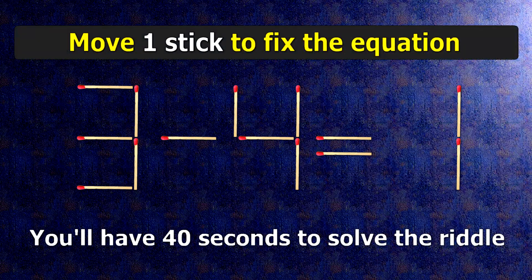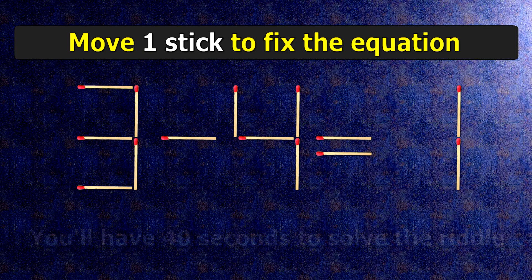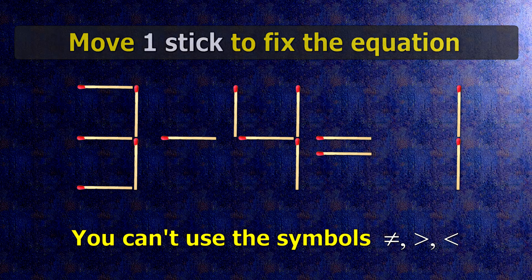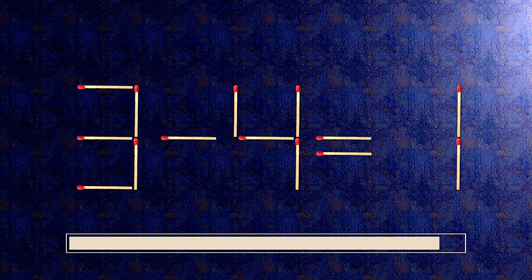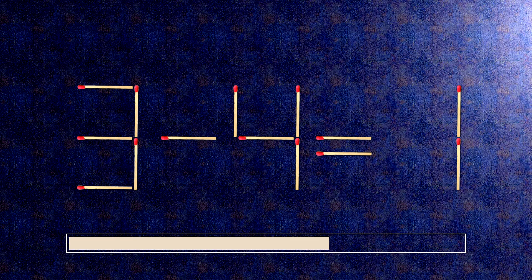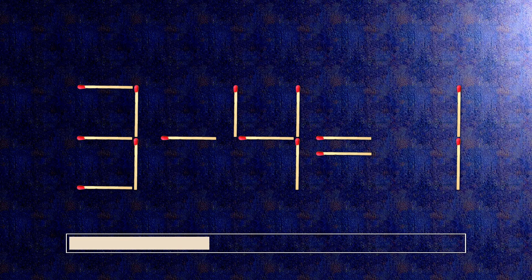We have the equality 3 minus 4 equals 1. Our equality is wrong. We need to move one match to make our equality correct.